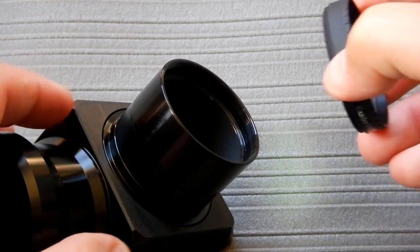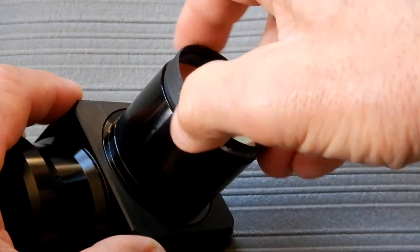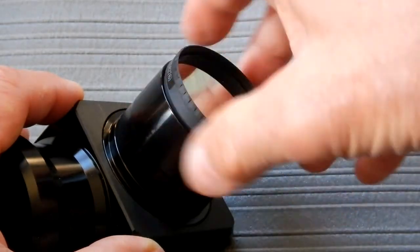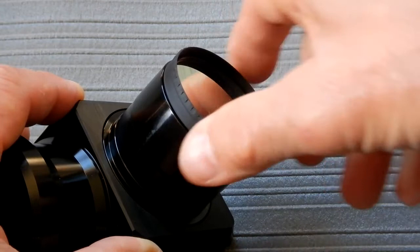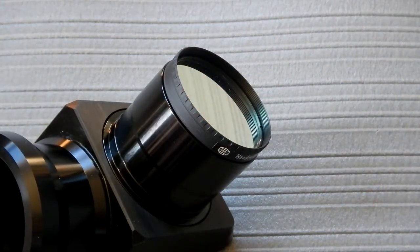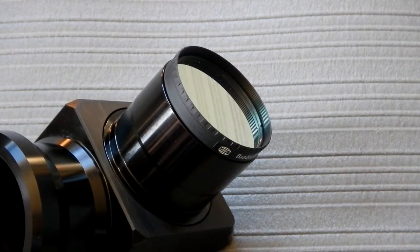These are also threaded, the nose piece, for your standard 48 millimeter filters. Here you see the reflection of the sky looking through the eyepiece end.